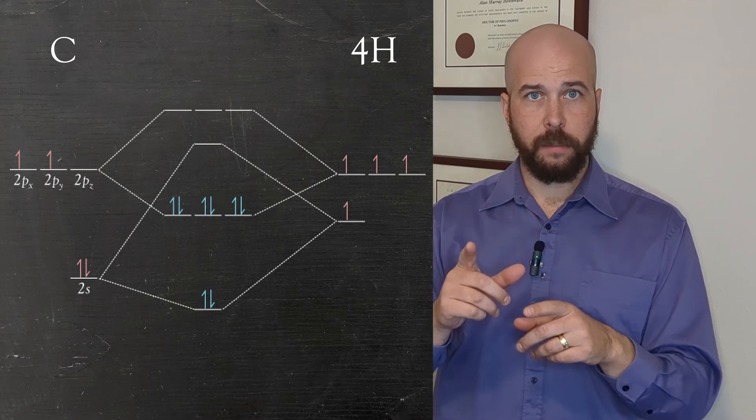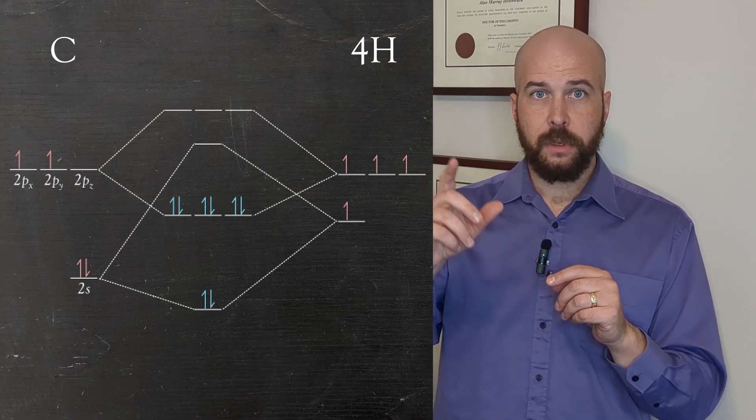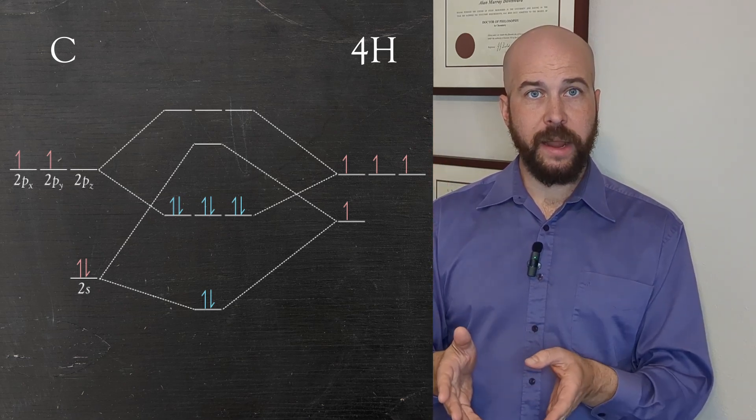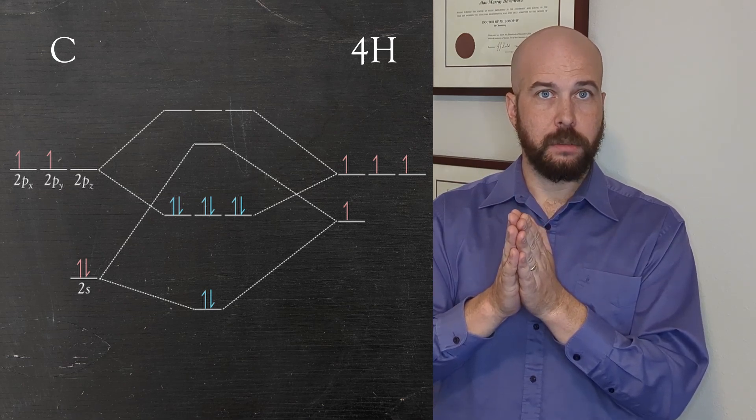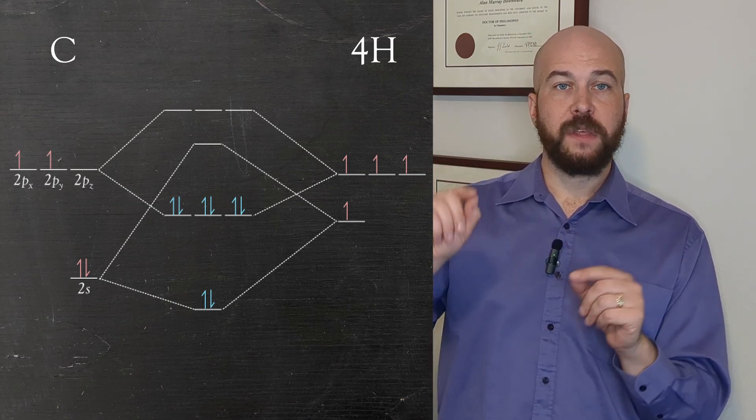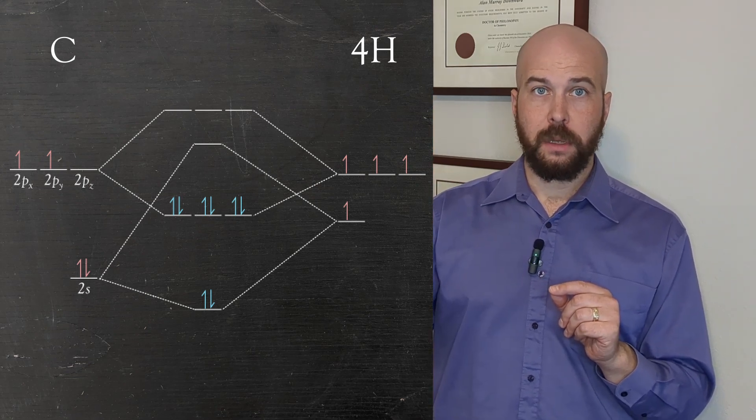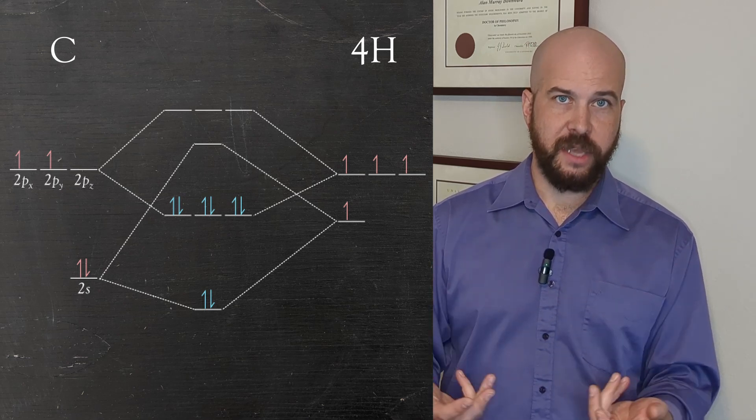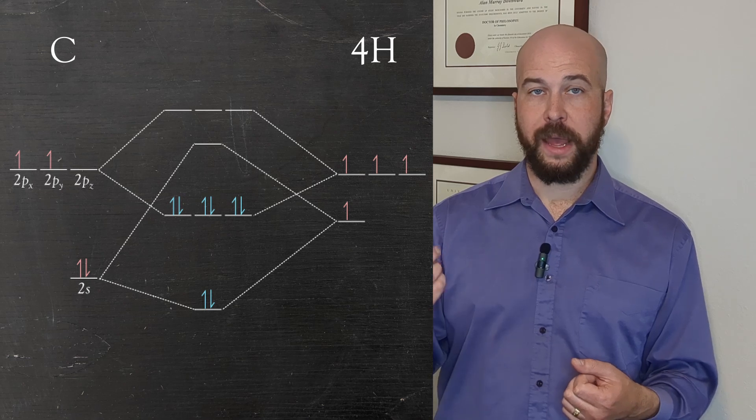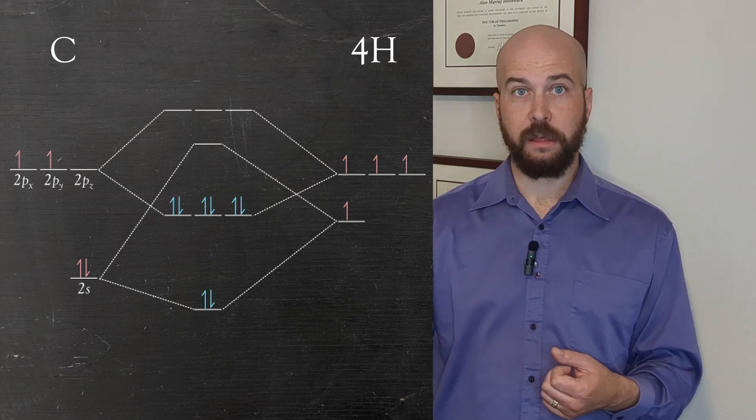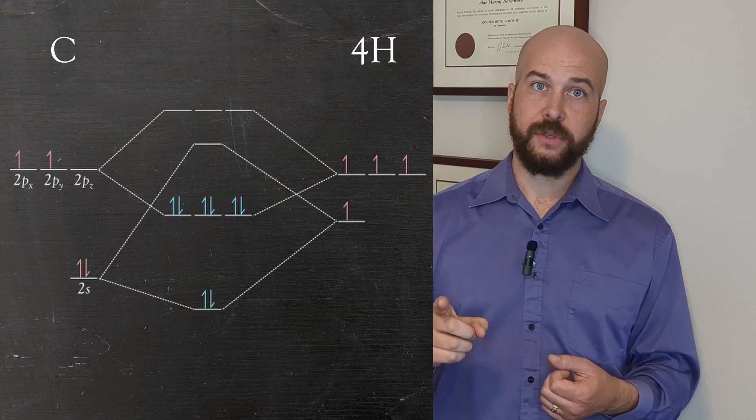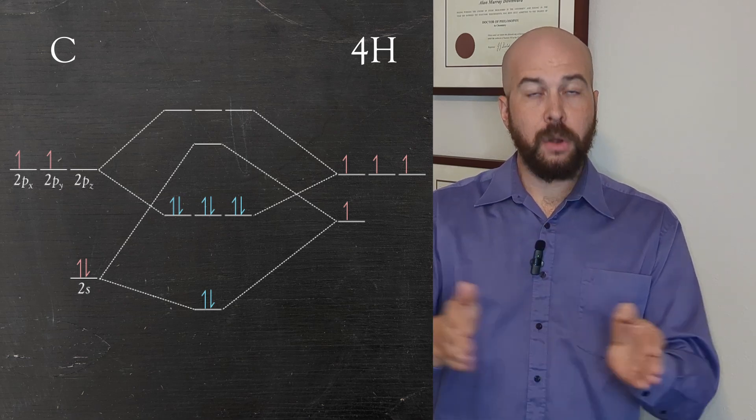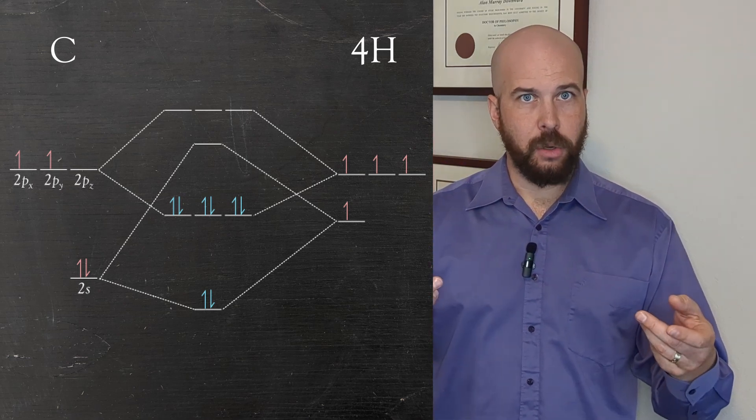The 2s orbital from the carbon can mix with the four hydrogen atoms all in the same phase to give a bonding interaction and an anti-bonding interaction. However it cannot mix with the other three orbitals because there are differences in the symmetry so therefore they cannot be mixed together. Those three orbitals where we have two atoms in one phase and two in another they're going to mix with the p orbitals and in doing so we will generate three bonding orbitals and three anti-bonding orbitals.